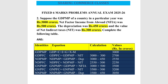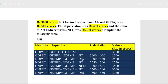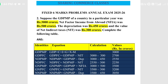What you need to do is make four columns. In the first column, write the identities. In the second column, write the equation. In the third column, write the calculation. In the fourth column, write the values. The identities will be given in the question; you need to write the equation and calculate the values.